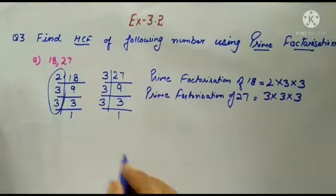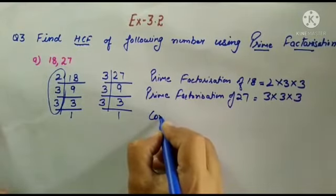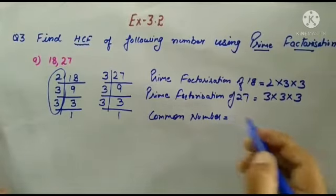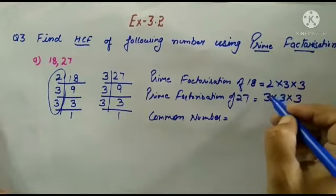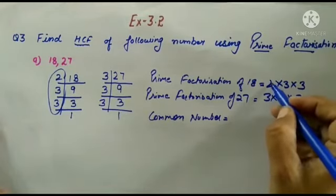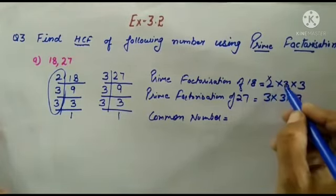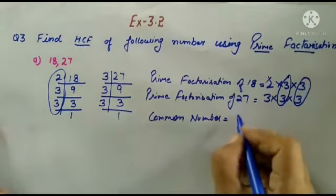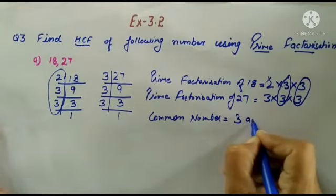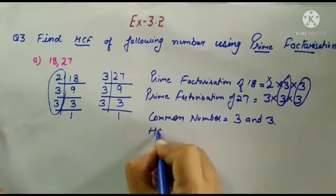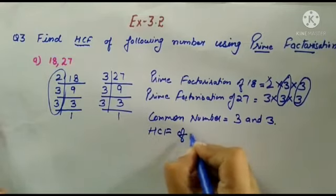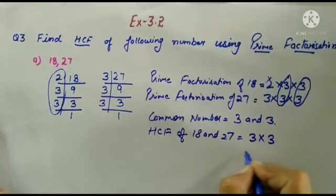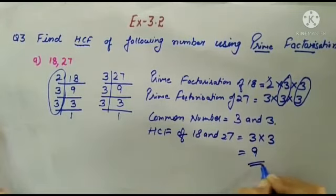Now we have common numbers. Common number is 3 and 3. We will not take 2. We will take 3 and 3. What is the HCF of 18 and 27? 3 multiplied by 3 is equal to 9. This is our answer.